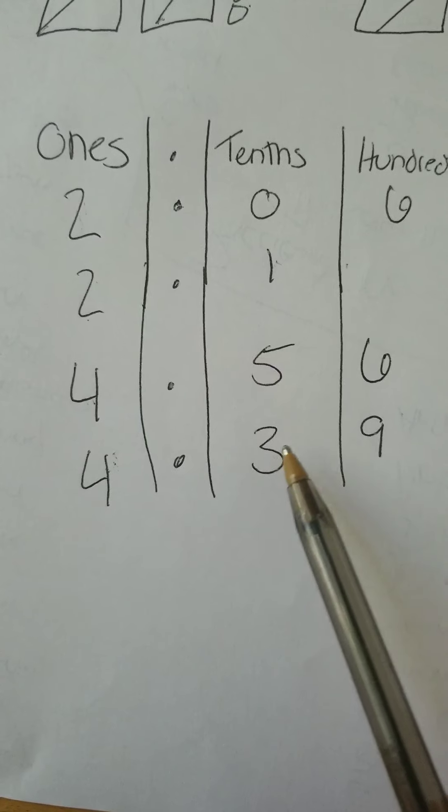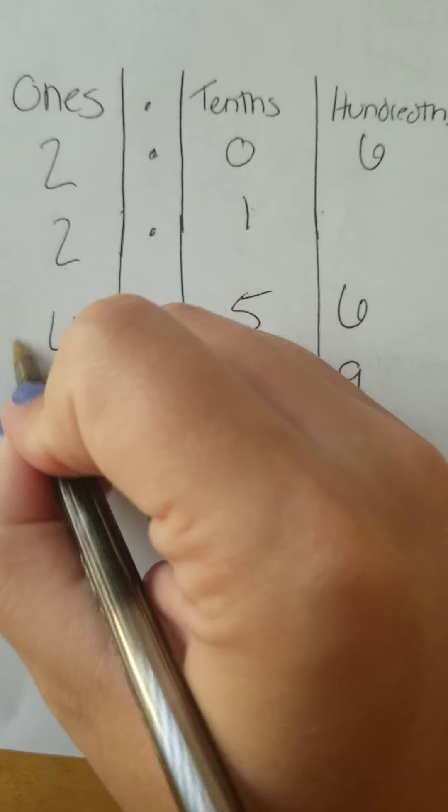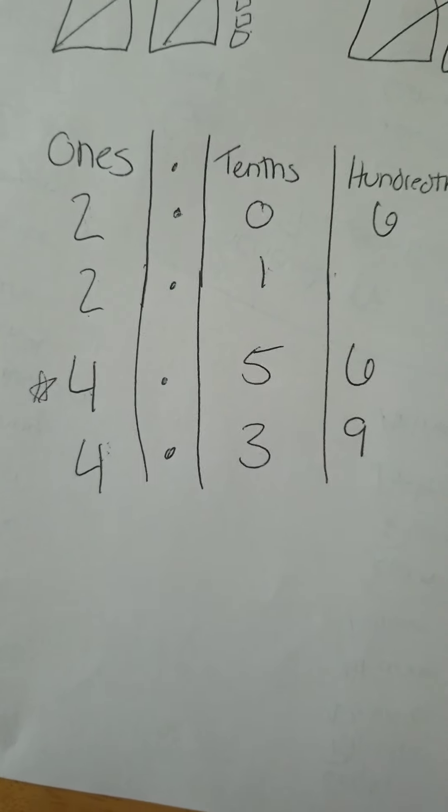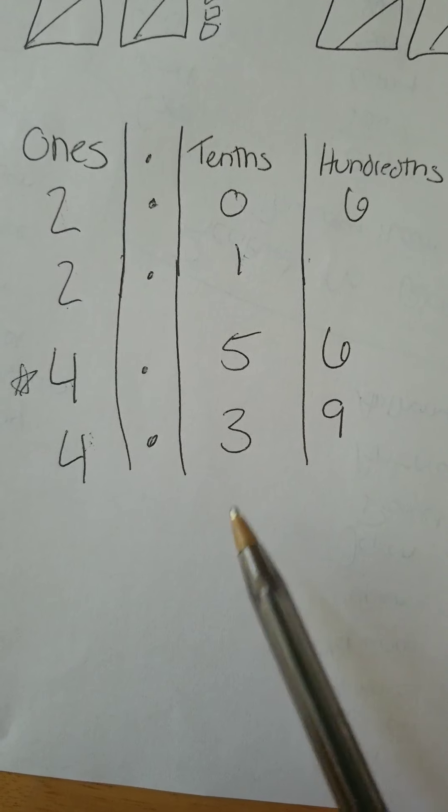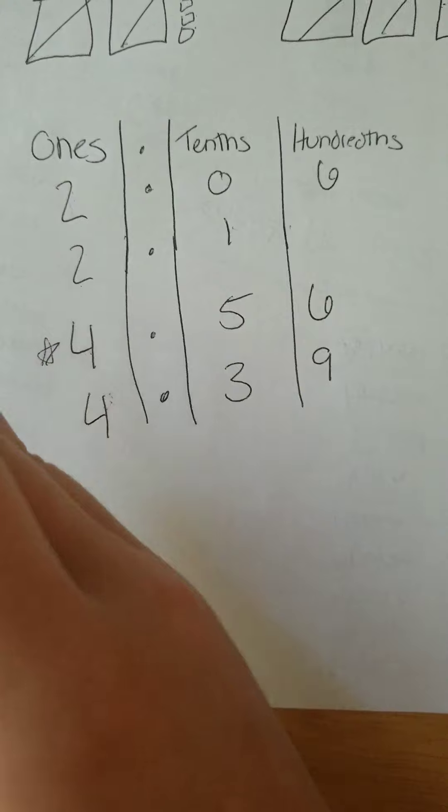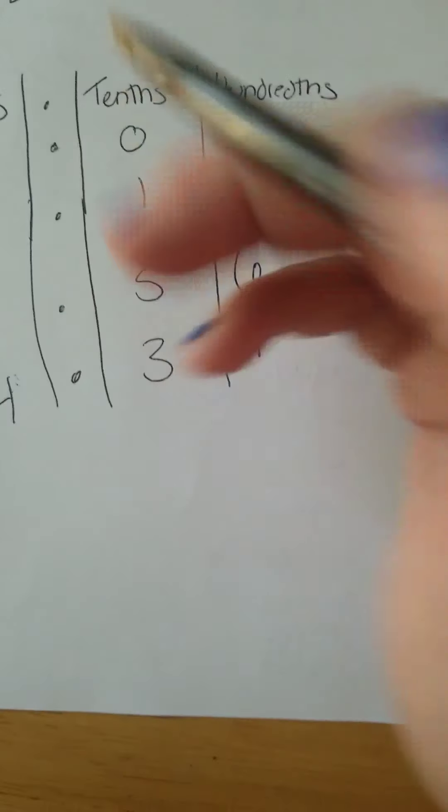Then I go to the next place value, five and three. Well, five is bigger than three, so therefore, this decimal right here, four and fifty-six hundredths, is going to be bigger than four and thirty-nine hundredths. We always start from the leftmost place value and work our way right.